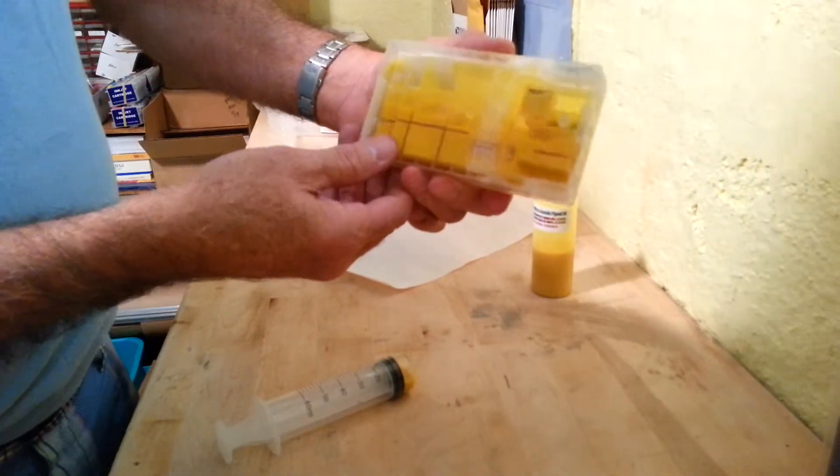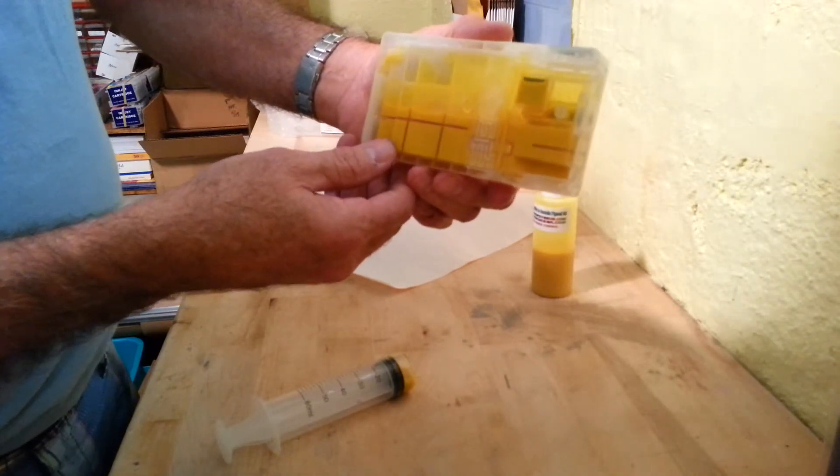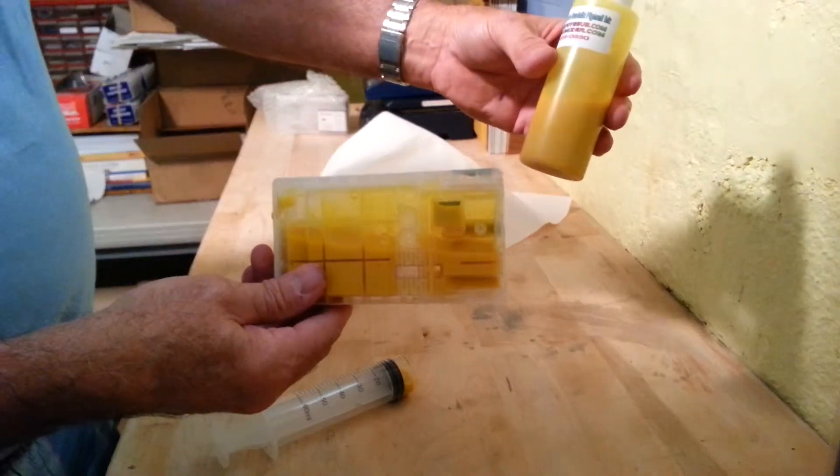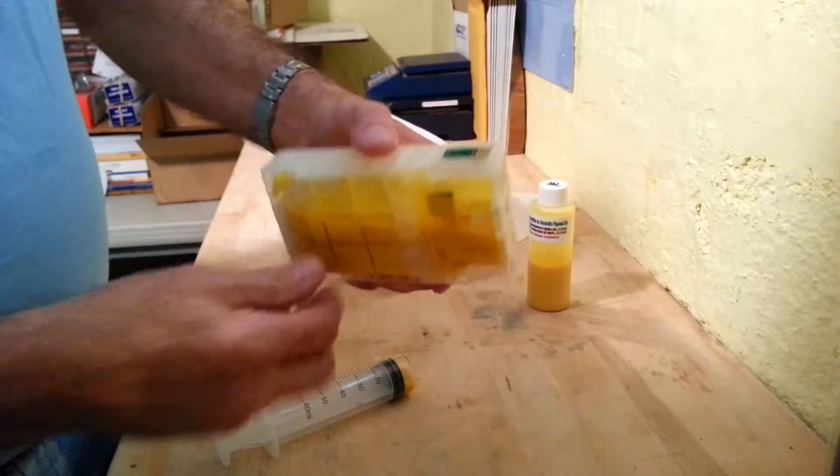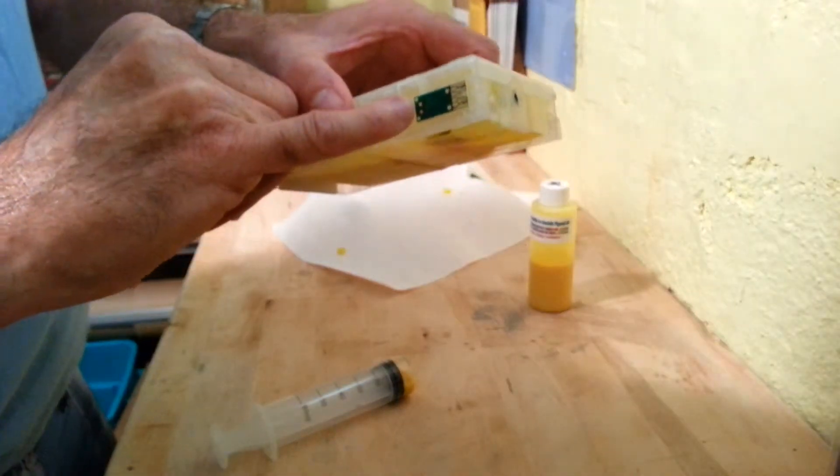And this cartridge is now half full. All told, it will hold approximately 120 milliliters of ink or the equivalent of a four ounce bottle. It comes with auto reset chips, these two little gold contacts that you see right here.